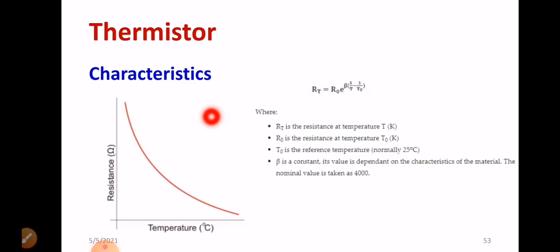You can observe the thermistor characteristics. This thermistor is basically NTC type thermistor. Here resistance and temperature are inversely proportional. With help of one equation, I can represent NTC type thermistor: RT equals R0 times e to the power beta into 1 by T minus 1 by T0.